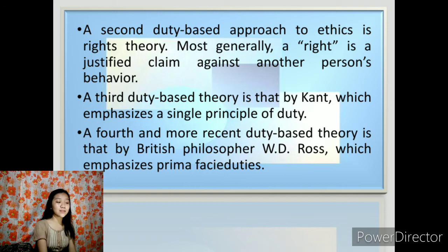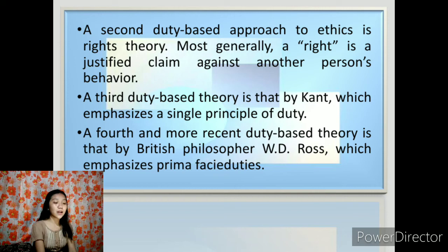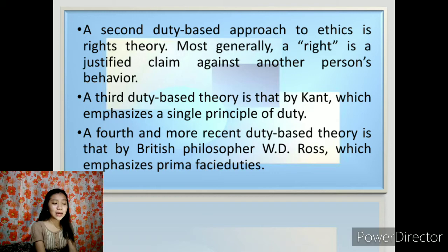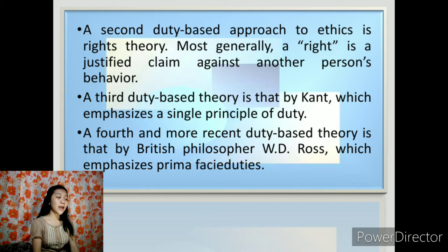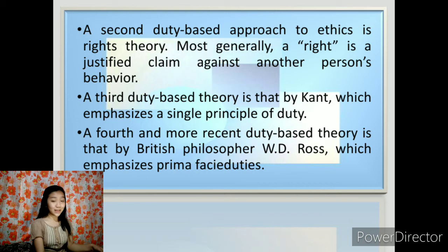There are four features traditionally associated with moral rights. First, rights are natural insofar as they are not invented or created by the government. Second, they are universal insofar as they do not change from country to country. Third, they are equal in the sense that rights are the same for all people, irrespective of gender, race, or handicap. And fourth, they are inalienable, meaning I cannot hand over my rights to another person, such as by selling myself into slavery.